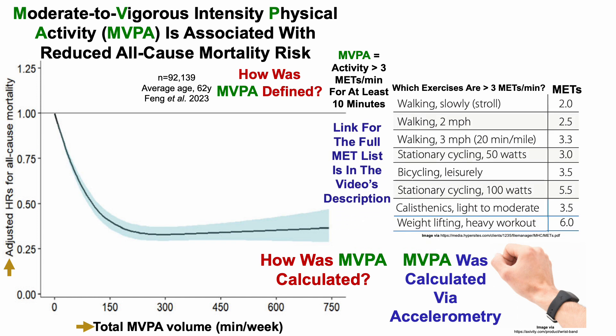A short list is shown here, and if you're interested in the full list for METs — metabolic equivalents of task — that link will be in the video's description. Walking slowly at 2 miles per hour would have METs less than 3, so it would not be included in MVPA. But walking at 3 miles per hour, stationary cycling at 50 or 100 watts, a leisurely bike ride, light to moderate calisthenics, or a heavy weightlifting workout would each have METs greater than 3 and would be included in this definition of MVPA.